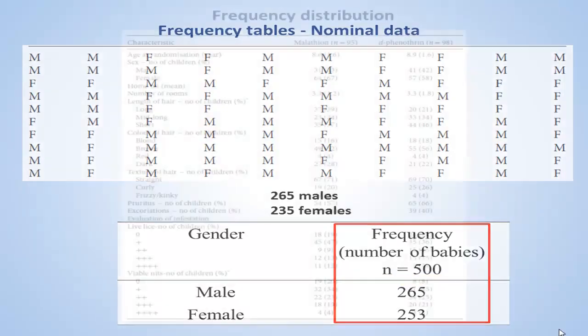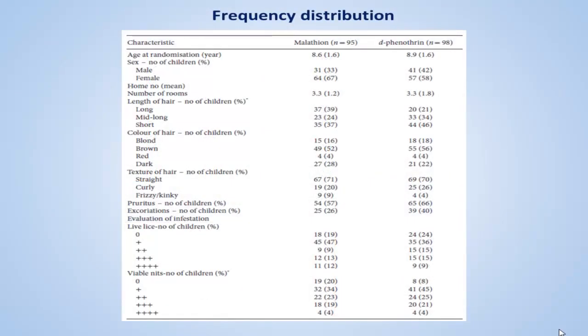Let's now talk about something called frequency distribution. Consider another example. This figure contains data from NET lotion study that compared two types of treatment for NETs, malathione and D-phenothrene, with a sample of 95 children. For each child, data were collected on nine variables.